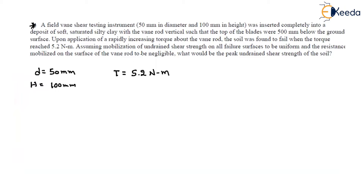So what are they asking? Assuming the mobilization of undrained shear strength on all failure surfaces to be uniform, and the surface resistance mobilized on the surface of the vane rod to be negligible — these are the standard assumptions considered while deriving the equation of the vane shear test. They are asking about the undrained shear strength of the soil.